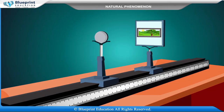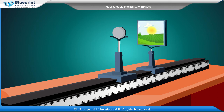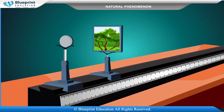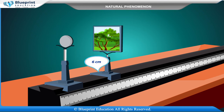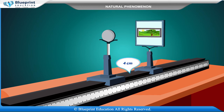For example, we have placed the stand at 5 cm on the meter scale; the position of the screen for a clear image of the sun is 10 cm, so the distance between the convex lens and the screen is 5 cm. For the tree, the position on the meter scale is 0 cm and the position of the screen is 6 cm, so the distance is 6 cm. For the window, the meter scale is set at 10 cm and the position of the screen is 14 cm, so the distance between the convex lens and the screen is 4 cm.